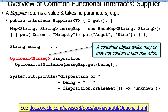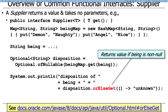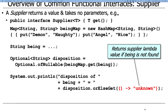We're going to print out the disposition of the being using disposition.orElseGet. If the disposition Optional has a value — not empty — it returns that value, so for demon it returns 'naughty,' for angel it returns 'nice.' But if the Optional is empty, orElseGet will use whatever supplier lambda you pass as the result. So the supplier parameter is used as the fallback when the Optional is empty.